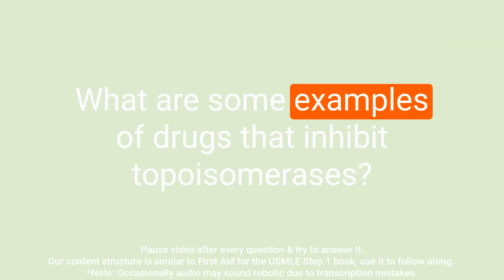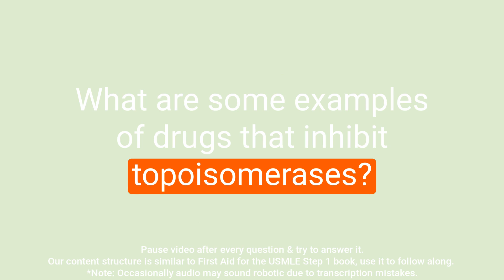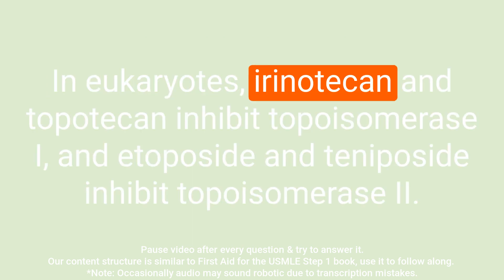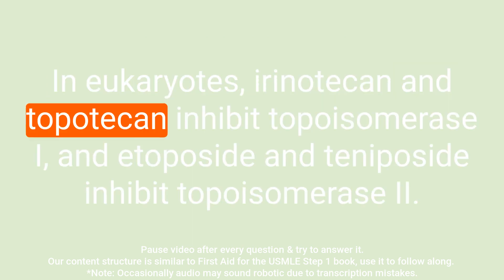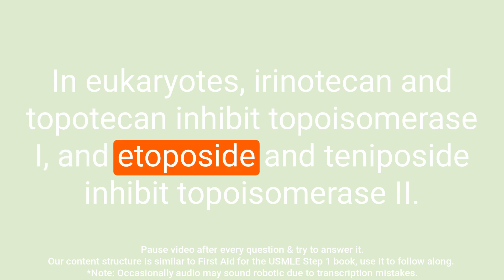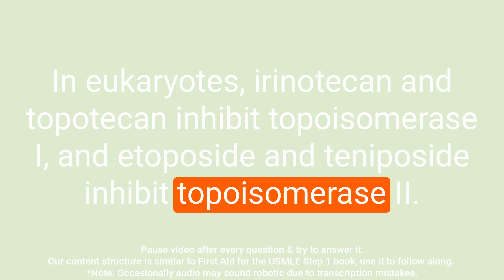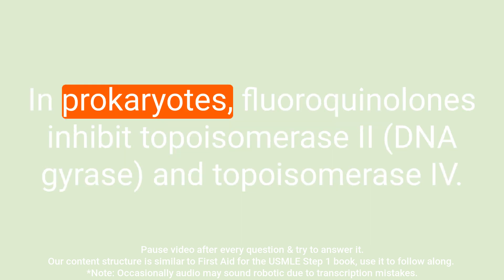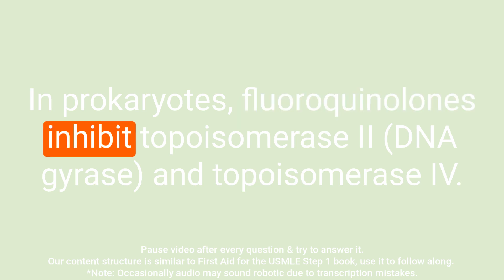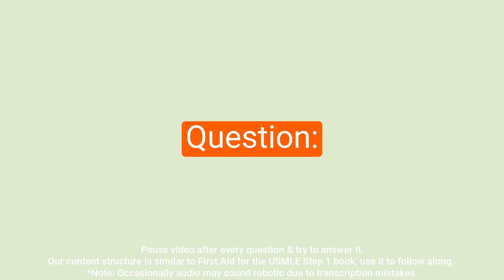Question: What are some examples of drugs that inhibit topoisomerases? Answer: In eukaryotes, irinotecan and topotecan inhibit topoisomerase I, and etoposide and teniposide inhibit topoisomerase II. In prokaryotes, fluoroquinolones inhibit topoisomerase II and topoisomerase IV.